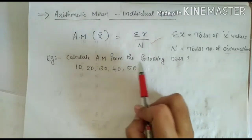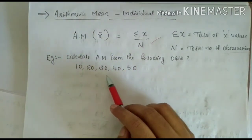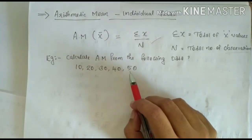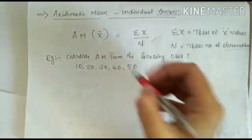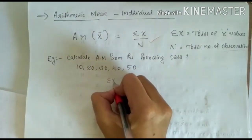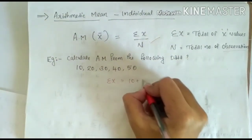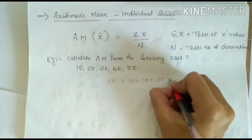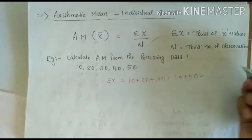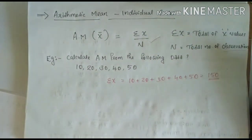For example, calculate arithmetic mean from the following data: 10, 20, 30, 40 and 50. First, you have to calculate sigma X. That is 10 + 20 + 30 + 40 + 50. The answer is 150. So sigma X is 150.